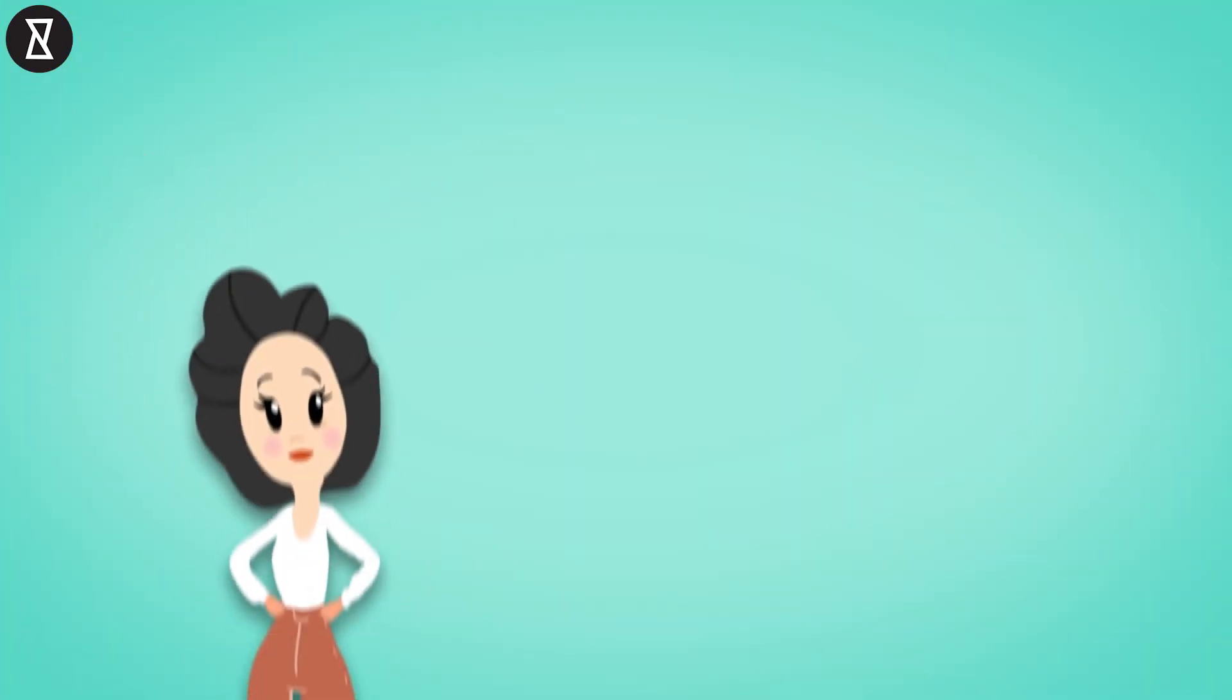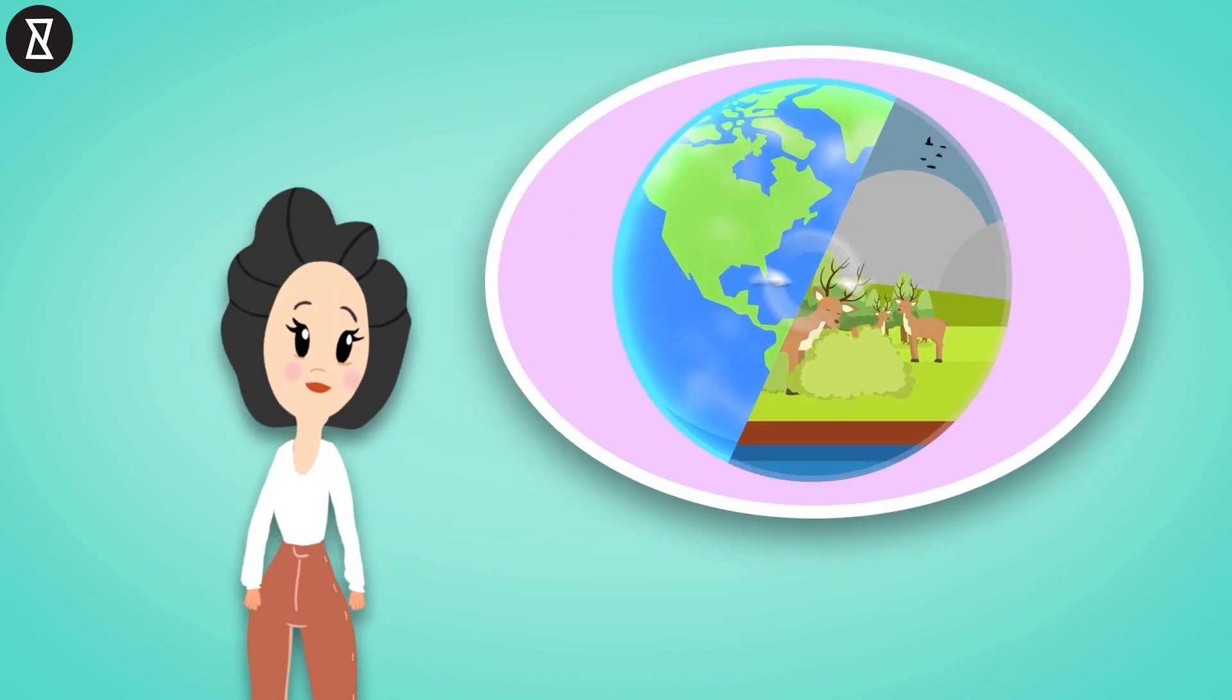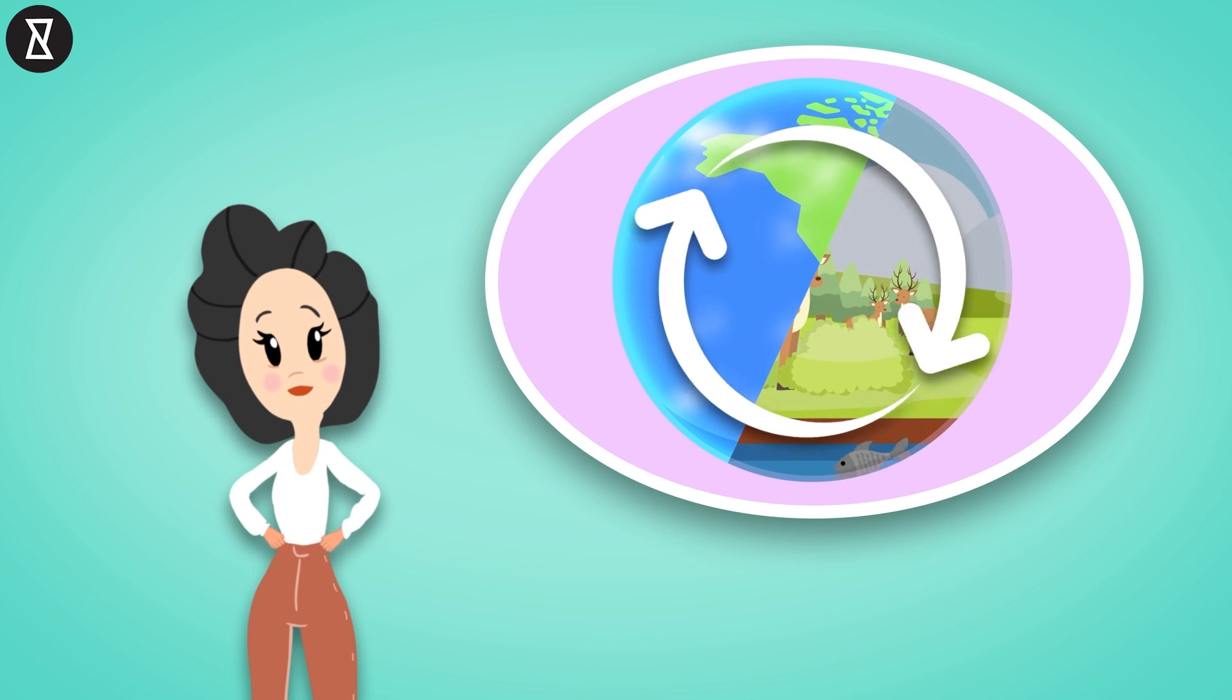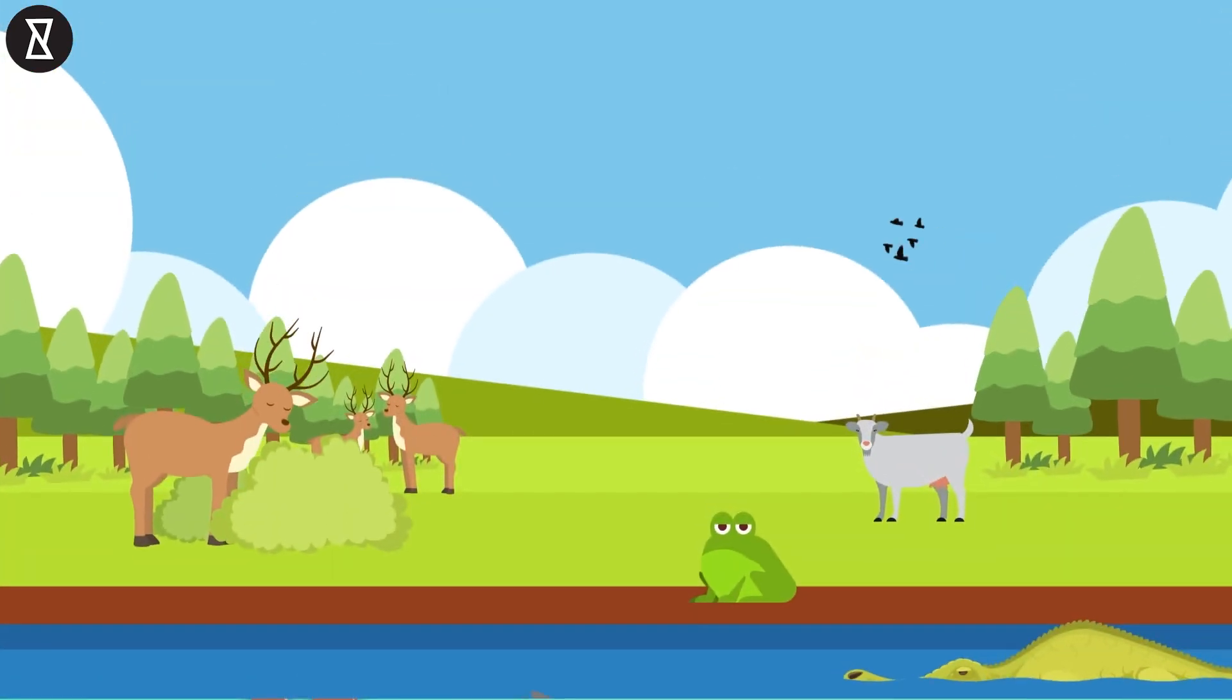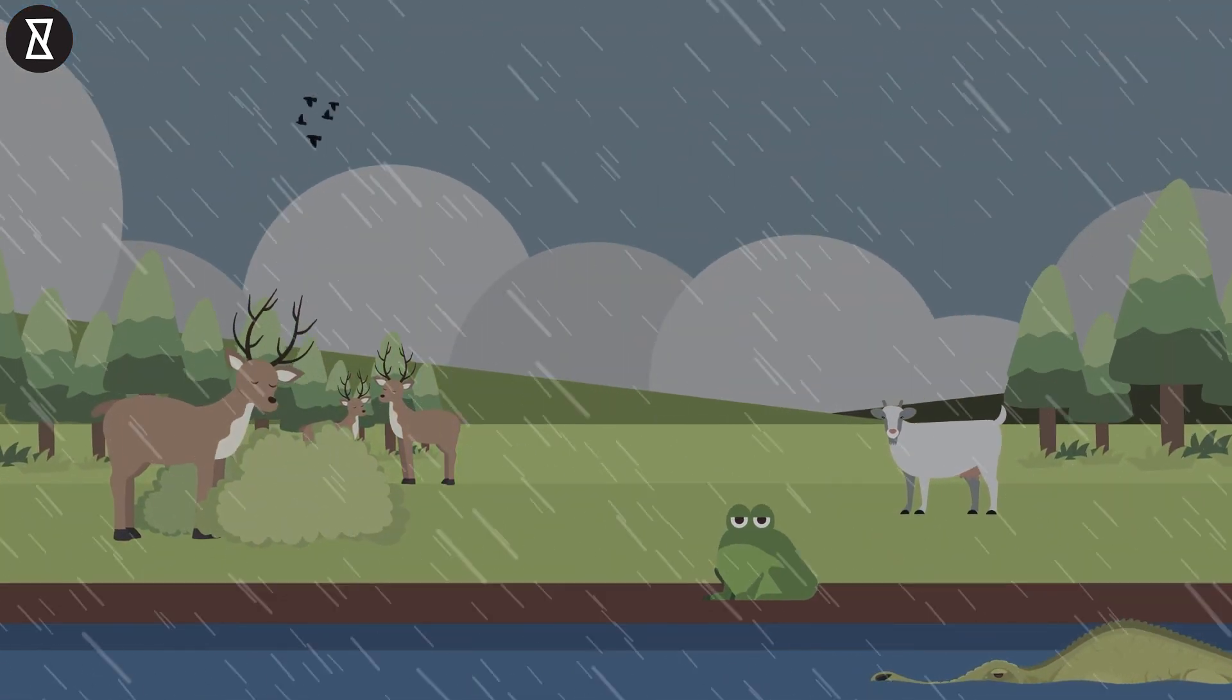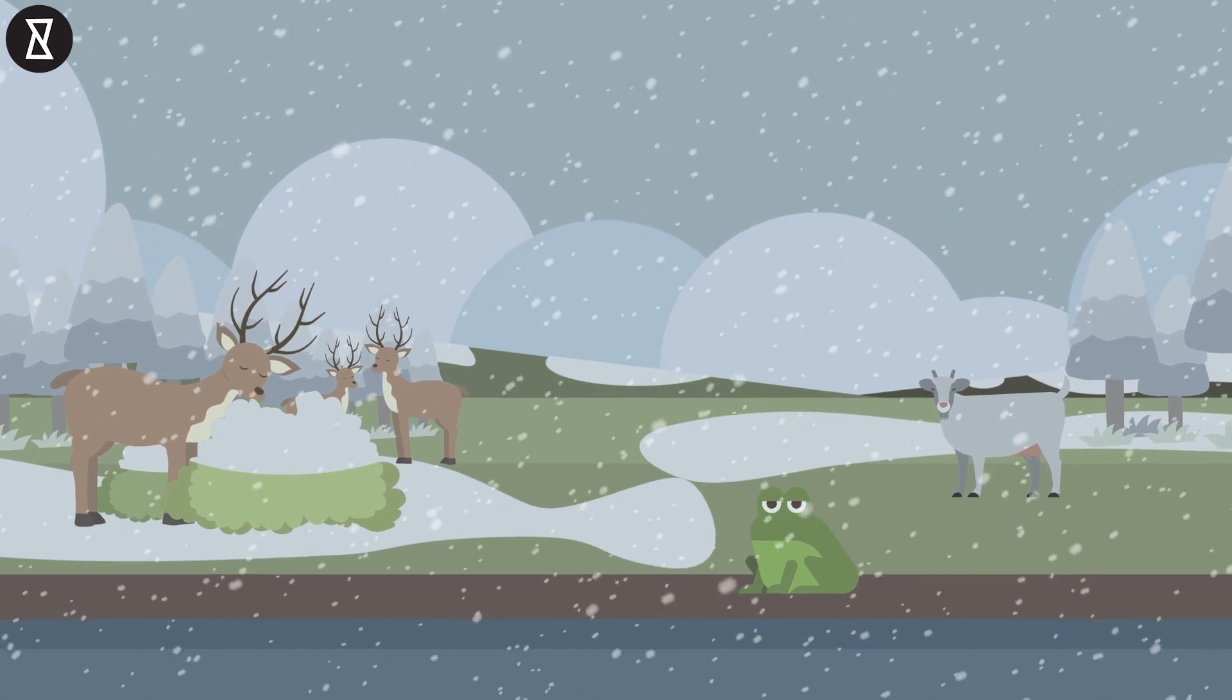In essence, many scientists have come to believe that Earth itself and life on Earth have evolved together over time in such a way that each has affected the other every step of the way. Rather than life on Earth simply reacting to the environment, life on Earth also affects and changes the environment around it.